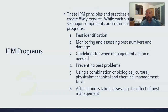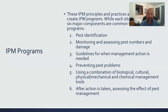The six principles of IPM programs are: nail pest identification so you're certain you're targeting the right thing; monitor and assess pest numbers and damage; establish guidelines for when management action is needed; prevent pest problems as long as possible; intervene using a combination of biological, cultural, physical, mechanical, and chemical management tools; and after action is taken, assess what you did — then you're right back to the start.